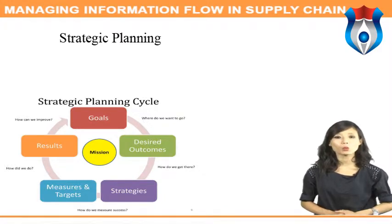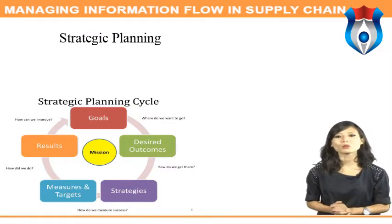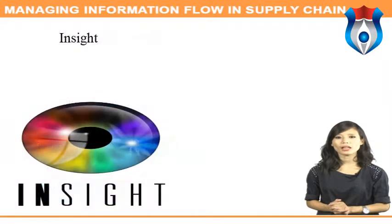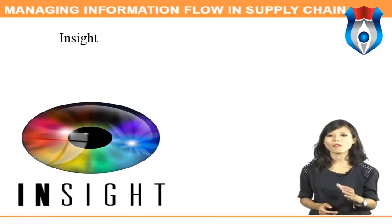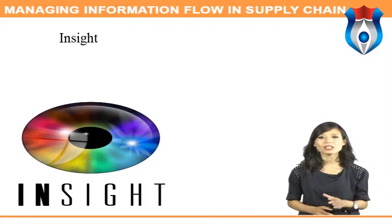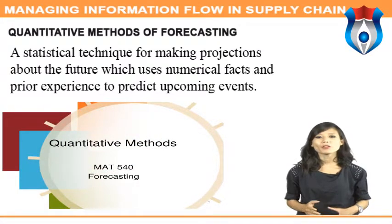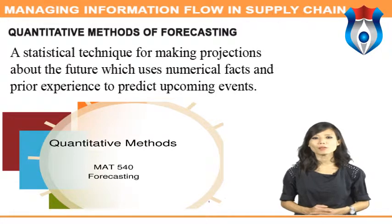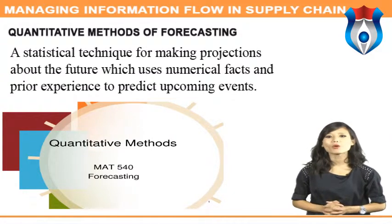The ultimate objective of strategic planning is to determine what the company should be in the future — what markets to compete in, with what products. To answer these questions, a company needs to know what new products its customers will want, how much of these products customers will want, and the level of quality and features expected. SCM software can help facilitate the process of forecasting and measuring the supply chain by synchronizing the supply and demand cycle through the use of real-time information.